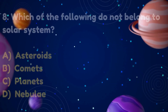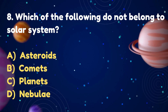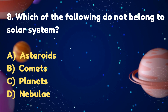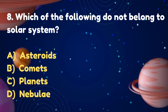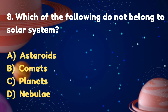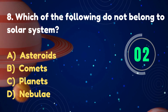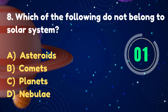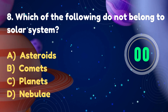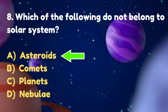Which of the following does not belong to the solar system? Options: Asteroids, Comets, Planets, Nebulae. Answer: Nebulae.